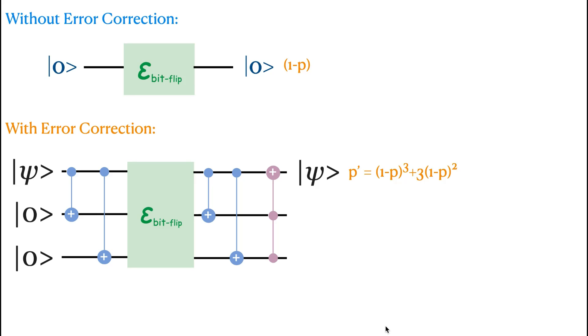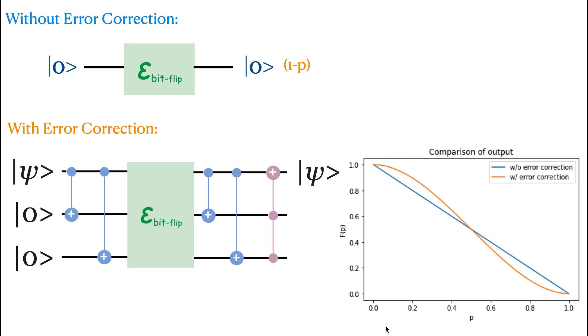And we can then plot the results and show that while the probability is smaller than 0.5, then the probability of the bitflipping does decrease if we apply the bitflip code for the error correction.